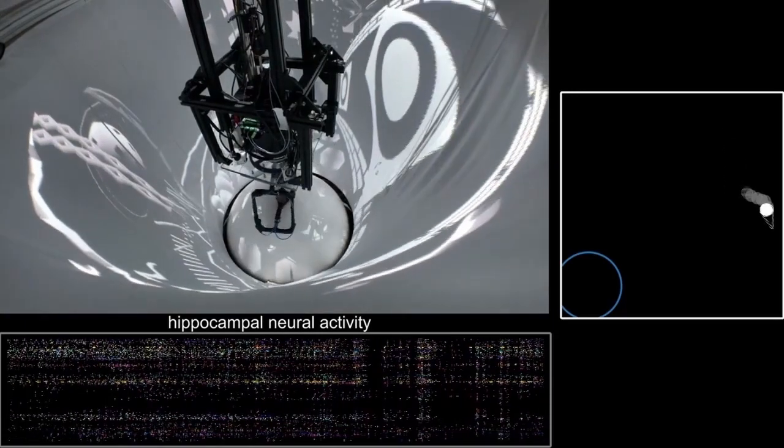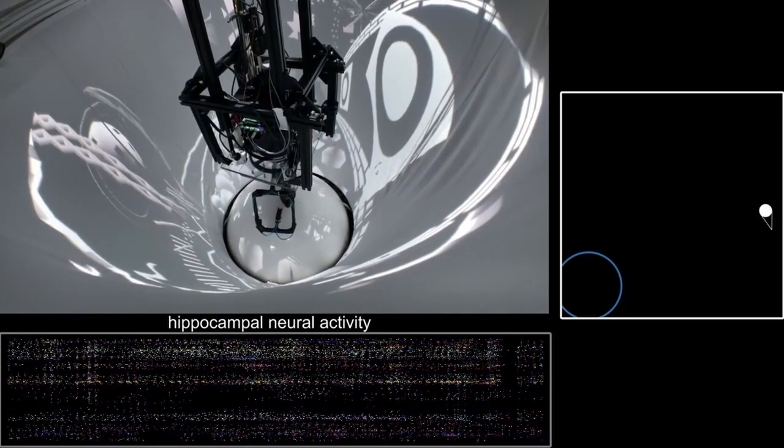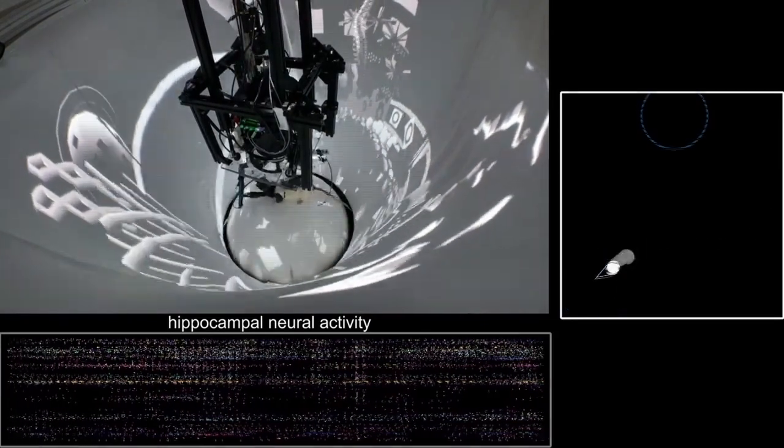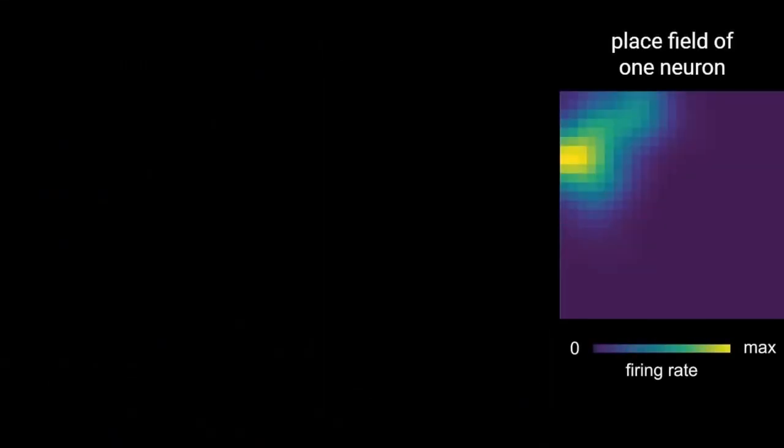We simultaneously recorded many hippocampal neurons. The recorded hippocampal activity exhibits spatial selectivity. In particular, some neurons increase their firing rate when the rat runs through specific locations in the 2D arena. This is known as place field activity.